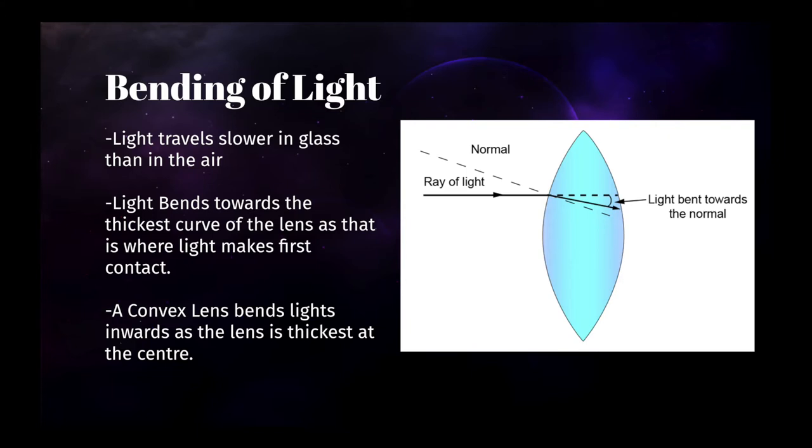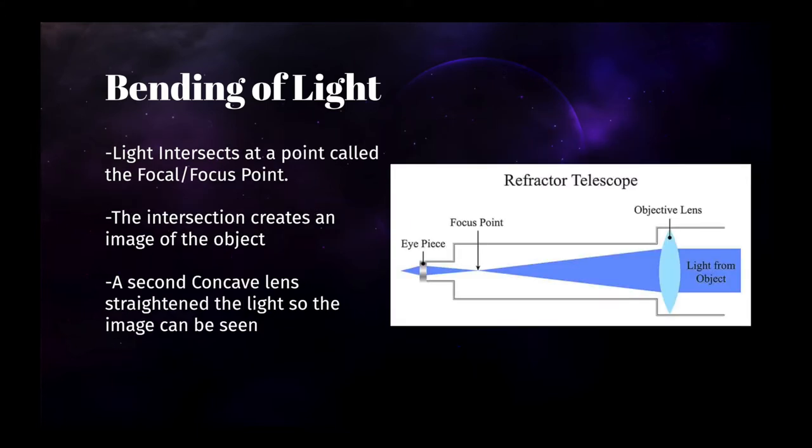When light passes through a convex lens, the light bends inwards as the thick part of the lens is in the center, thereby bending the light towards the center. This means that light from an object can be directed towards a focus or a focal point.